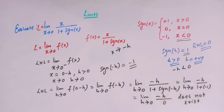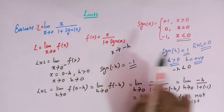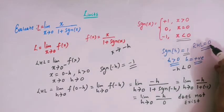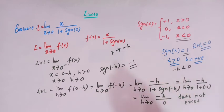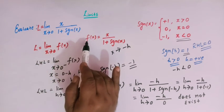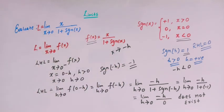The left hand limit does not exist because we have 0 in the denominator. The right hand limit is 0 but the left hand limit does not exist, so both limits are not equal. We therefore conclude that the limit of f of x as x tends to 0 does not exist. This is how we solve this problem using the concept of the signum function.